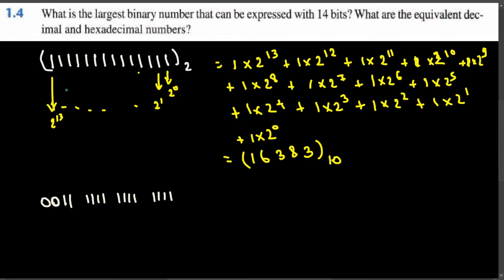When converting each group of four binary digits to hexadecimal, we use the weights 8, 4, 2, 1 — which come from two to the power three, two squared, two to the power one, and two to the power zero. For a group of all ones: 8 plus 4 plus 2 plus 1 equals 15, and 15 in hexadecimal is F. So each full group of four ones gives us F.